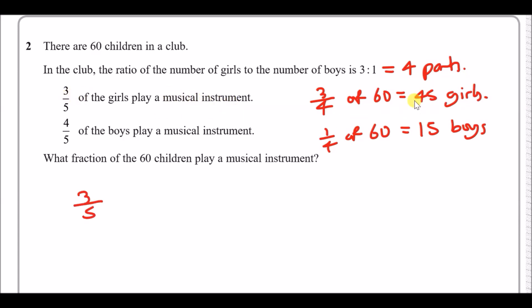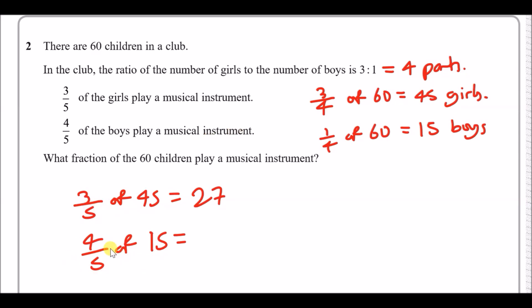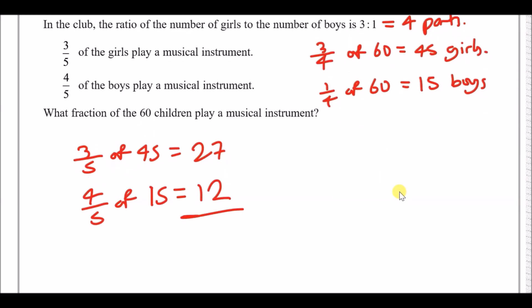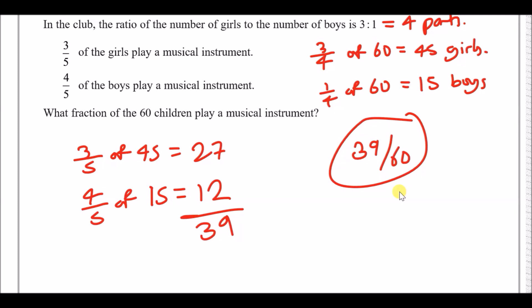Next: 3/5 of the girls play a musical instrument, so 3/5 of 45 equals 27 play music. 4/5 of the boys play: 4/5 of 15 — one fifth is 3, times 4 equals 12 — so 12 boys play. What fraction of the 60 children play altogether? 27 plus 12 equals 39 children out of 60, which simplifies to 13 out of 20.